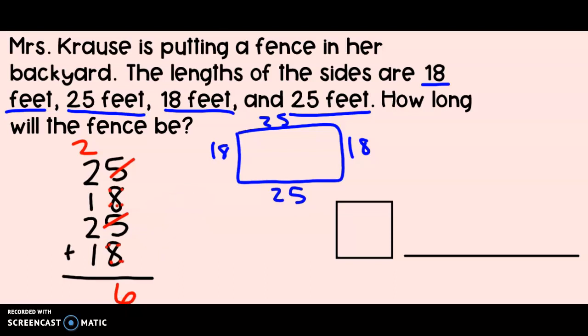Now, let's count up the 10s. 2 plus 2 is 4, 5, 6, 7, 8, 86. And let's think about our unit. What should it be? Feet. Because everything in this problem was measured in feet.